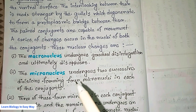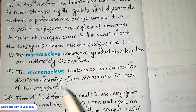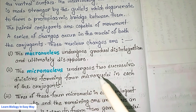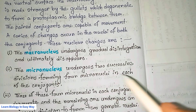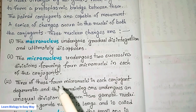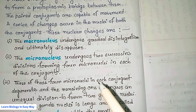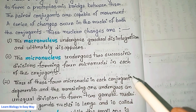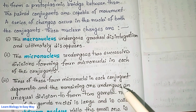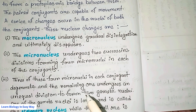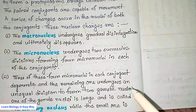The micronucleus undergoes two successive divisions forming four micronuclei in each of the conjugants. Three of these four nuclei in each conjugant degenerate, and the remaining one undergoes an unequal division to form two gamete nuclei.